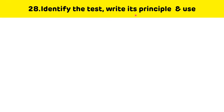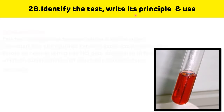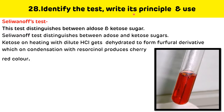Identify the test, write its principle and use. This is the Seliwanoff test, which differentiates between aldoses and ketosugars. Ketoses on heating with dilute HCl get dehydrated to form a furfural derivative, which on condensation with resorcinol produces a deep red color.